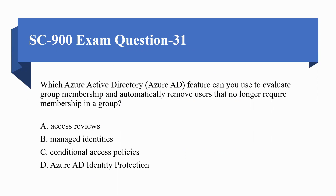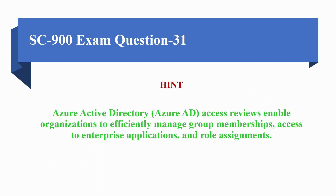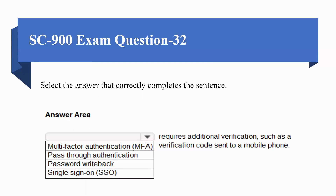Options are: A) Access Reviews, B) Managed Identity, C) Conditional Access Policies, D) Azure AD Identity Protection. The correct option is A, Access Reviews, because Azure Active Directory access reviews enable organizations to efficiently manage group membership, access to enterprise applications, and role assignments.